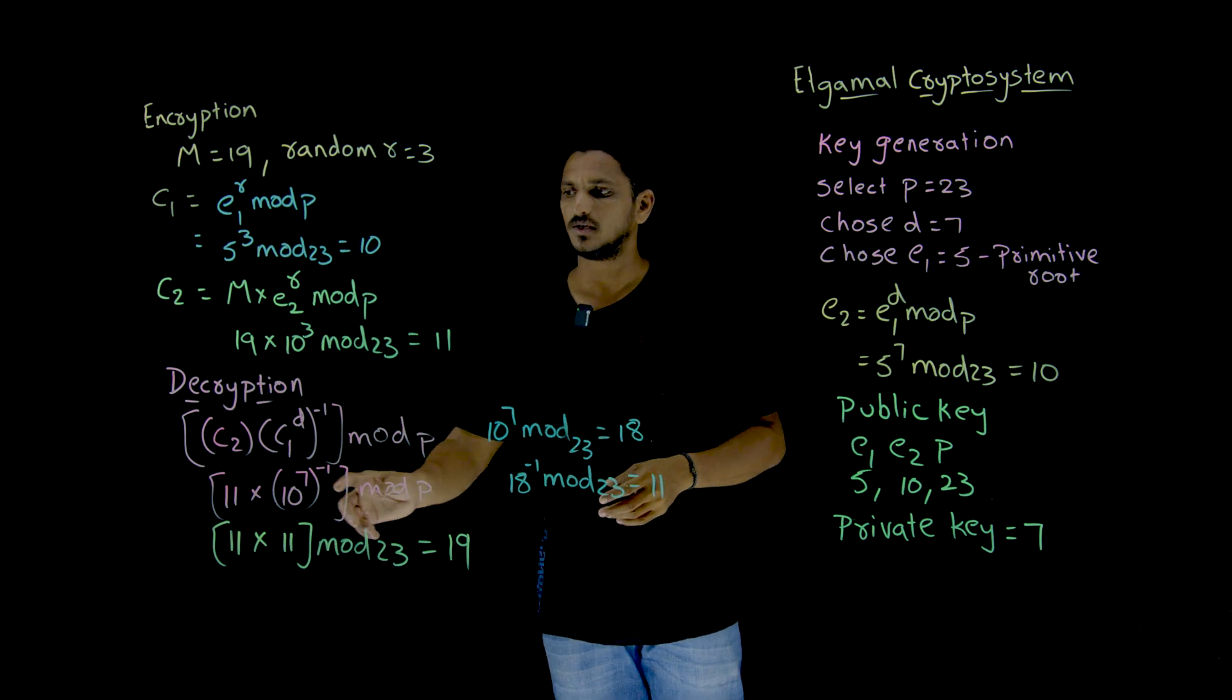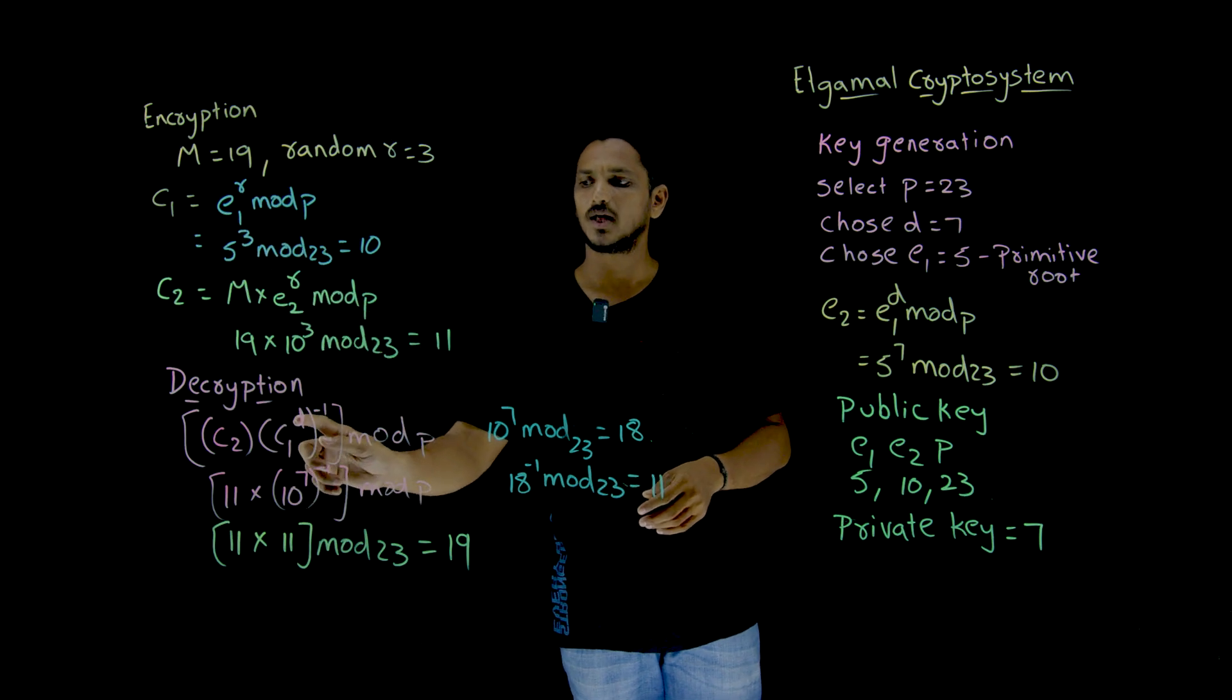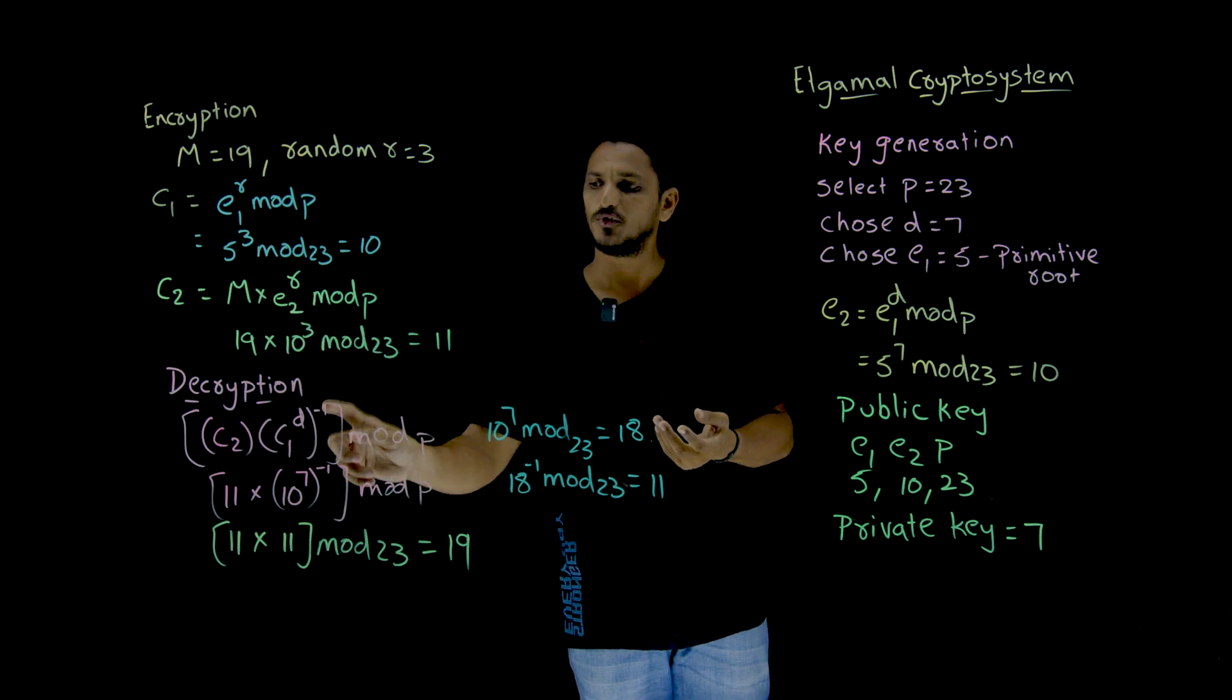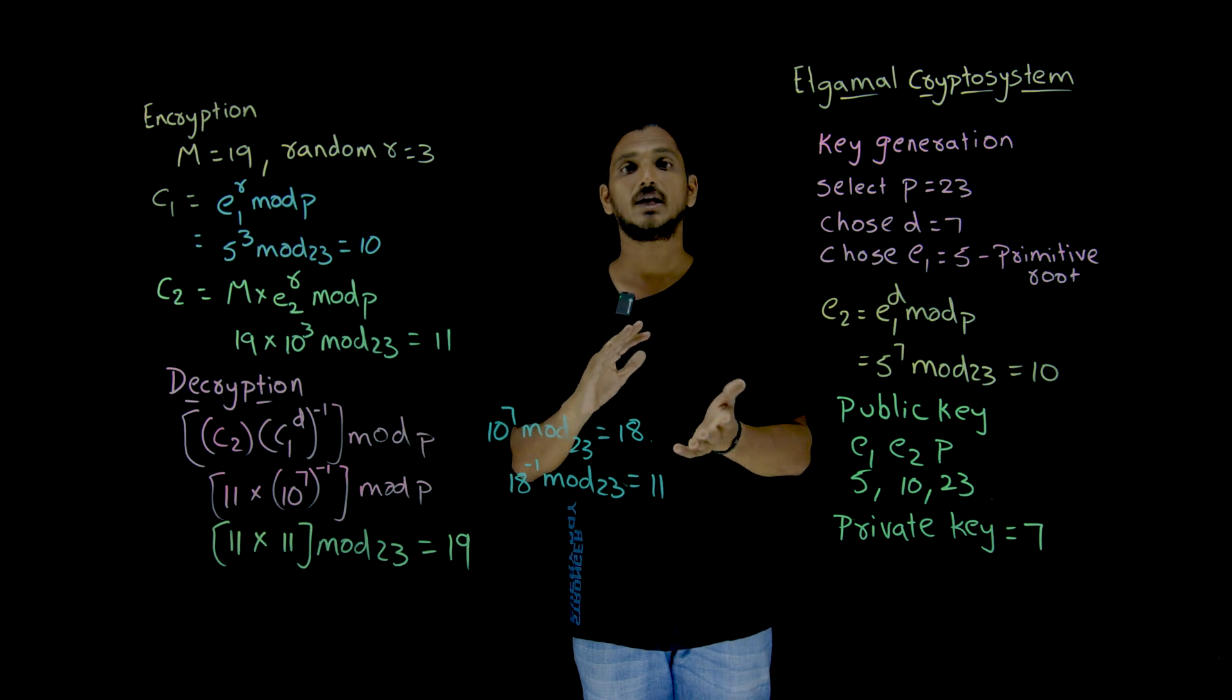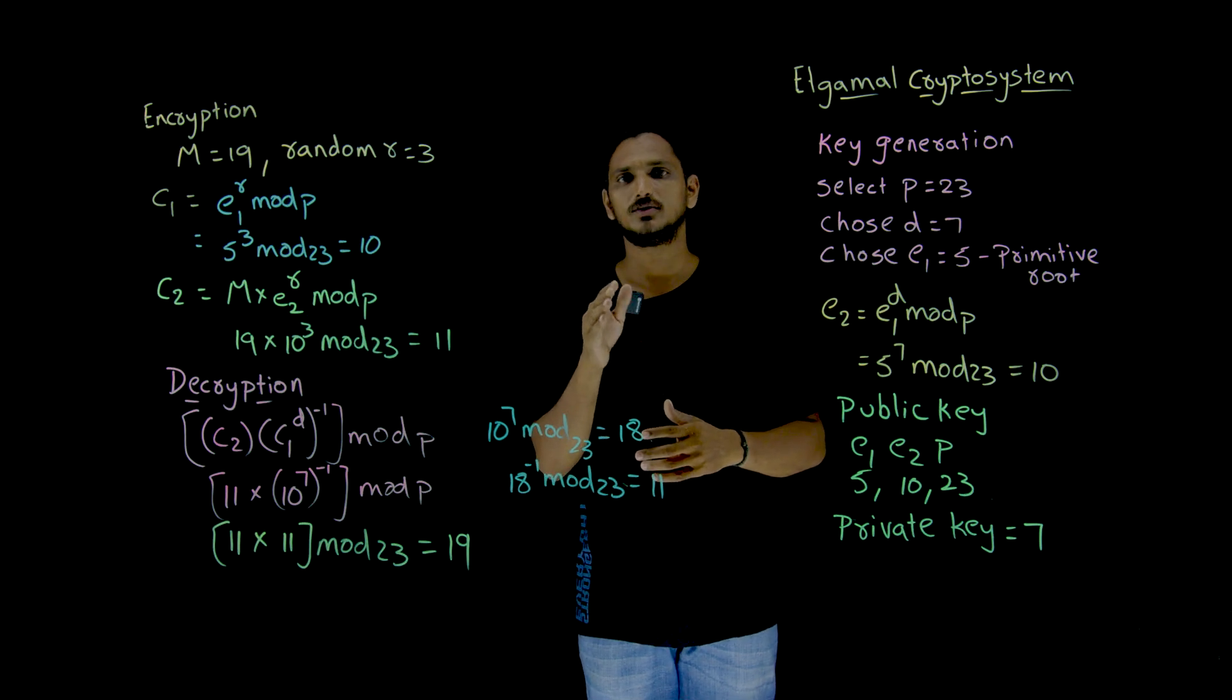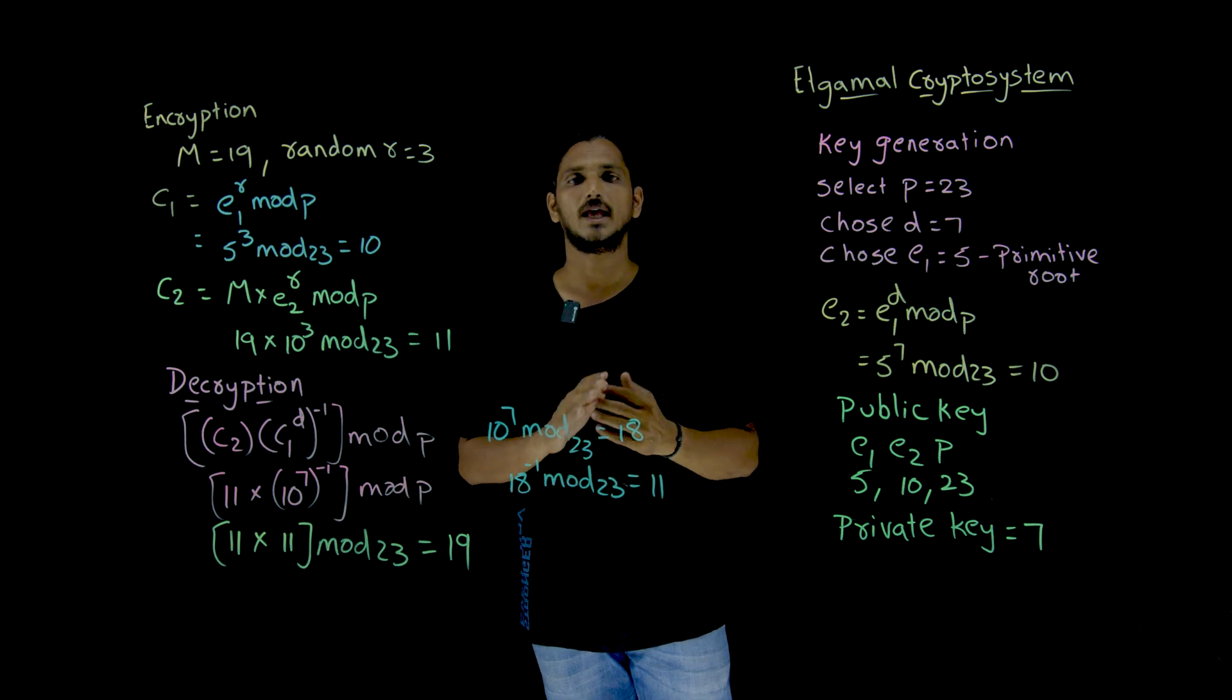So he is going to use D and R value to unmask. How he is going to do unmask? C2 multiplied by C1 power D. C1 means E1 power R. E1 power R D inverse. Here for masking, we are using E1 power R D. If you apply inverse, that is it. Inverse gets cancelled. Because in the Z23 star over multiplication, if you do inverse values, X, X inverse mod P, you are going to get 1. Cancelled out.